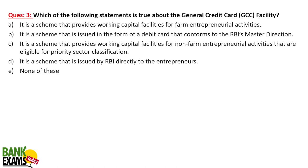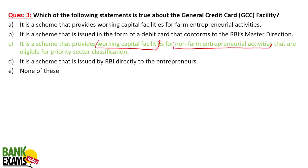Which of the following statements is true about the General Credit Card facility? It is a scheme that provides working capital facility for non-farm entrepreneurial activities that are eligible for priority sector classification. General Credit Card facility has been started for them — this is a very important product, remember the name as it can appear in the exam.